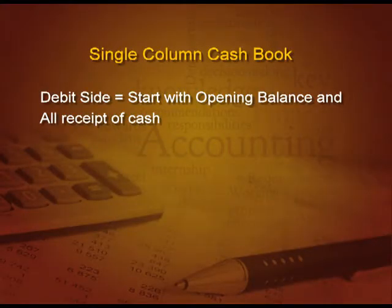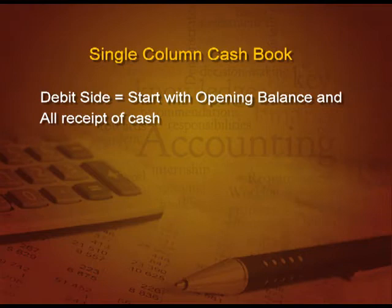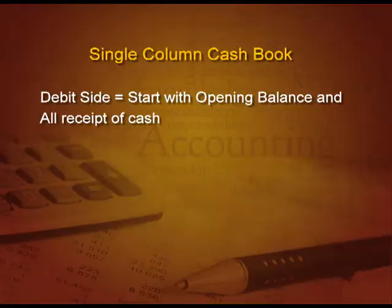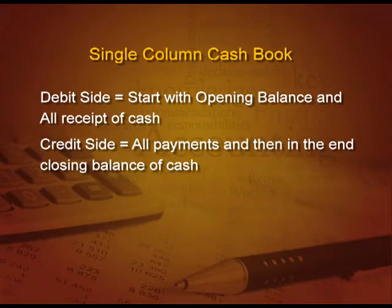Now let us discuss the single column cash book in detail. It starts with the debit side, where in the first entry we write opening balance of cash. Then we record all the receipts of cash — whether it is by cash sale of goods or cash sale of furniture — all the things in which we receive cash are recorded on the debit side. On the credit side, all the payments whether related to goods, expenses, assets or anything — all payments related to cash are recorded on the credit side, and then finally we arrive at the closing balance of cash.